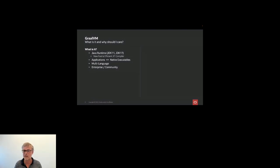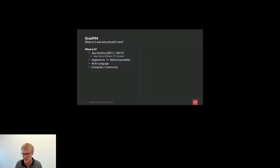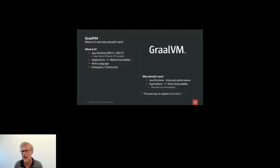So why should I care? If you're thinking about GraalVM as a Java runtime, it's improved performance. If you want to build fast-starting, low-footprint native executables, then the Native Image part of GraalVM is what's interesting. The best way to explain this is through examples — we're going to iteratively build applications, look at how we turn them into native images, deploy them, and compare the performance of the Java version against the native executable.